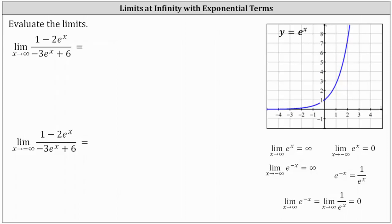Let's first check the form of the limit. As x approaches infinity, one is not affected by x. Then we have minus two times e to the x. E to the x approaches infinity as x approaches infinity, but because we have negative two times e to the x, negative two times e to the x approaches negative infinity as x approaches infinity.